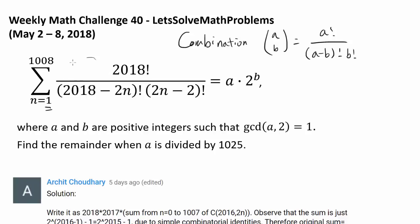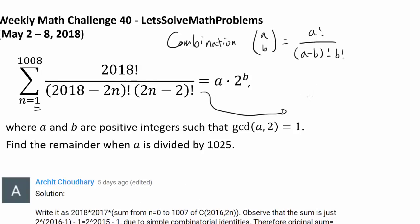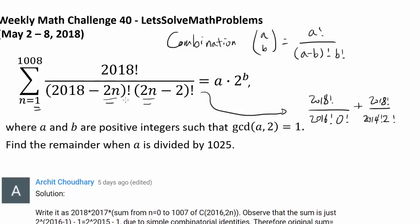Let's start by plugging in some values and see if the expressions look similar to anything we know. Let's plug in values of N and see if we get anything familiar. Starting with N equals 1, we have 2018 factorial over 2016 factorial times 0 factorial. And when N equals 2, we have 2018 factorial over 2014 factorial times 2 factorial. As N increases by 1, the first part decreases by 2 while the second part increases by 2.